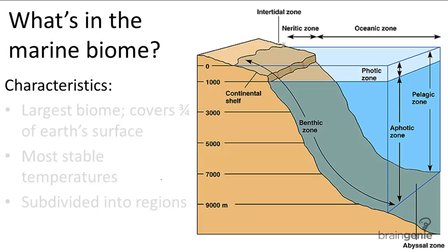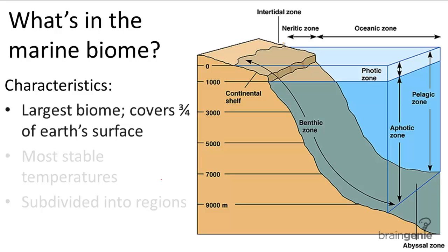The marine biome is the largest of all biomes. This is pretty obvious, because when you look at a globe, you can see that the ocean covers about three quarters of its surface. Because of water's ability to absorb a great deal of heat without changing temperature, this biome also has the most stable temperatures.